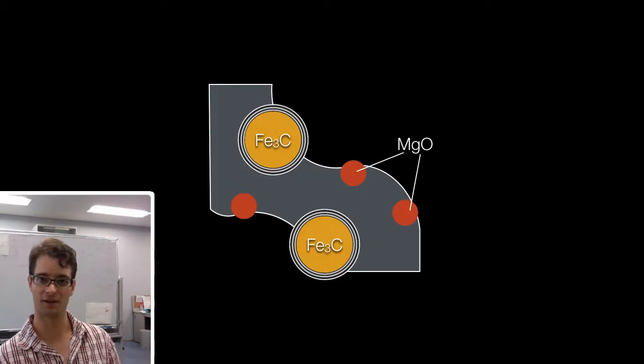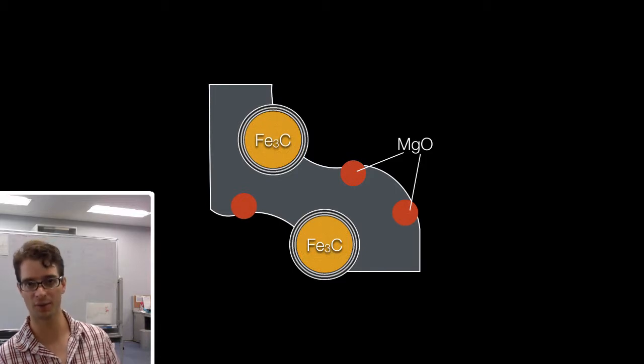Schematically, that looks like this. So we have a grey carbon support, and in this carbon support we find magnesium oxide particles and iron carbide particles. The iron carbide particles are surrounded by graphitic carbon shells.